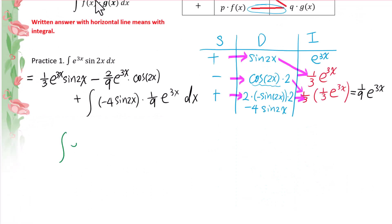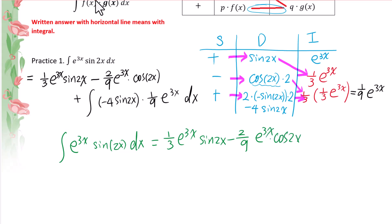Simplify. The integral of e to the power of 3x sin 2x equals 1 over 3 e to the power of 3x sin 2x, minus 2 over 9 e to the power of 3x cos 2x, minus 4 over 9 times the integral of e to the power of 3x cos 2x. We have this same integral appearing on both sides.